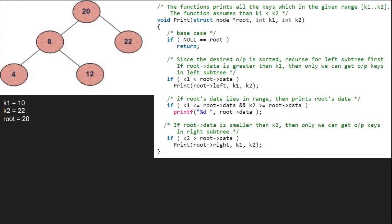Since root is not null, we check if k1 is less than root's data. As it is true, we call for the left subtree of 20 using a call stack. Now, root will point to 8.